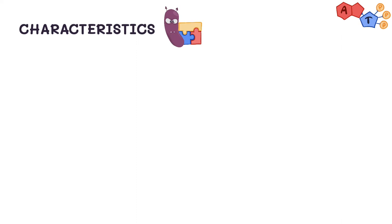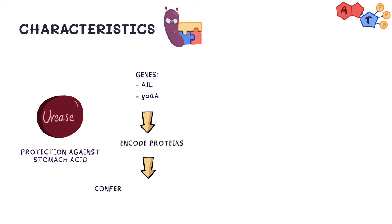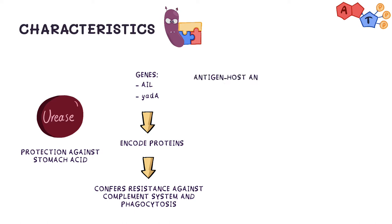It has various virulence factors. First, it produces urease to protect itself from stomach acid. Second, it utilizes the genes AL and YAD-A, which encode for proteins that make Yersinia resistant against the complement system and phagocytosis. Third, it may produce antigens that cross-react with host antigens, leading to arthritis in adults.